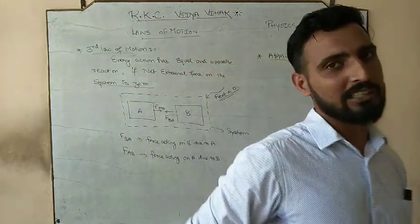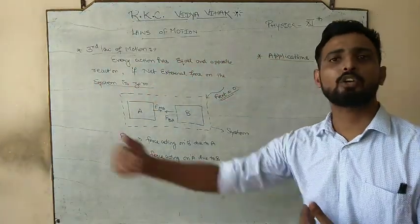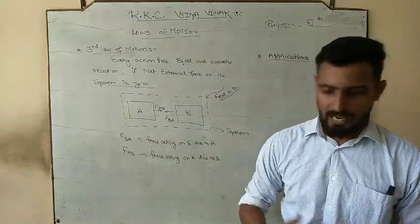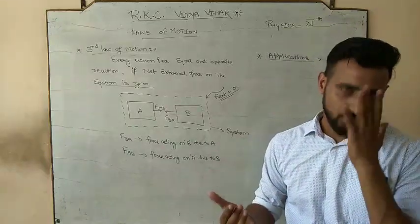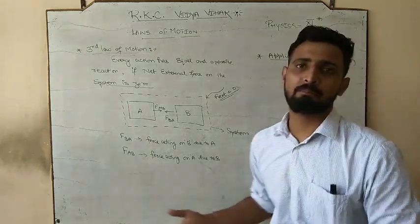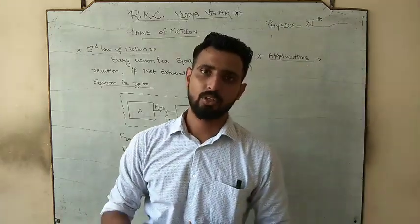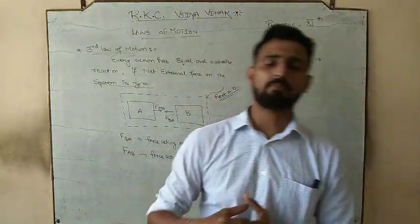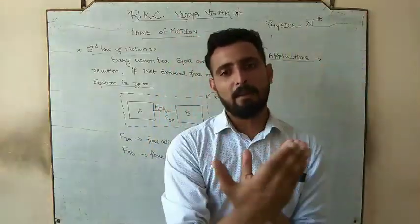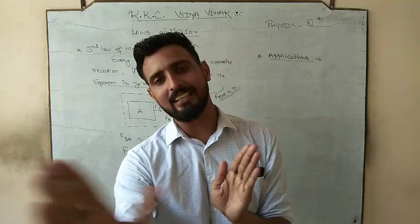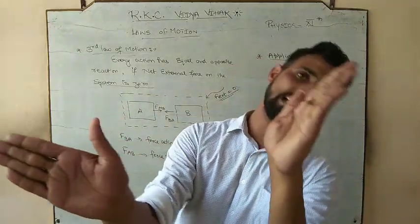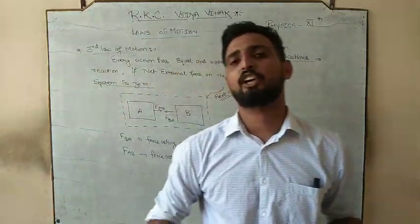We have already seen applications of the first law. If a vehicle suddenly starts, you fall back — that is inertia of rest. If the vehicle suddenly brakes, you fall forward — that is inertia of motion. If you take a sudden left or right turn, your body tends to continue in the original direction — that is called inertia of direction.